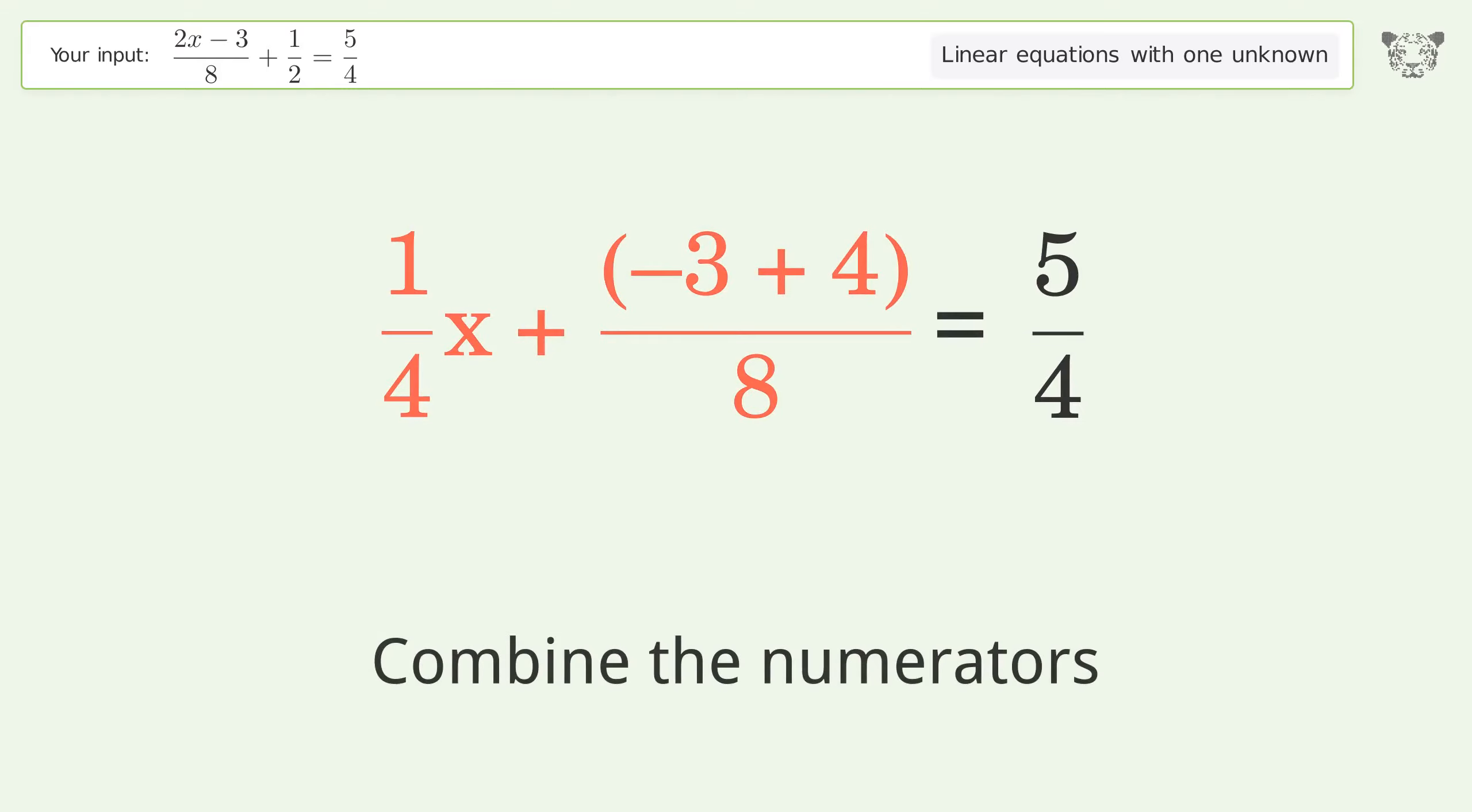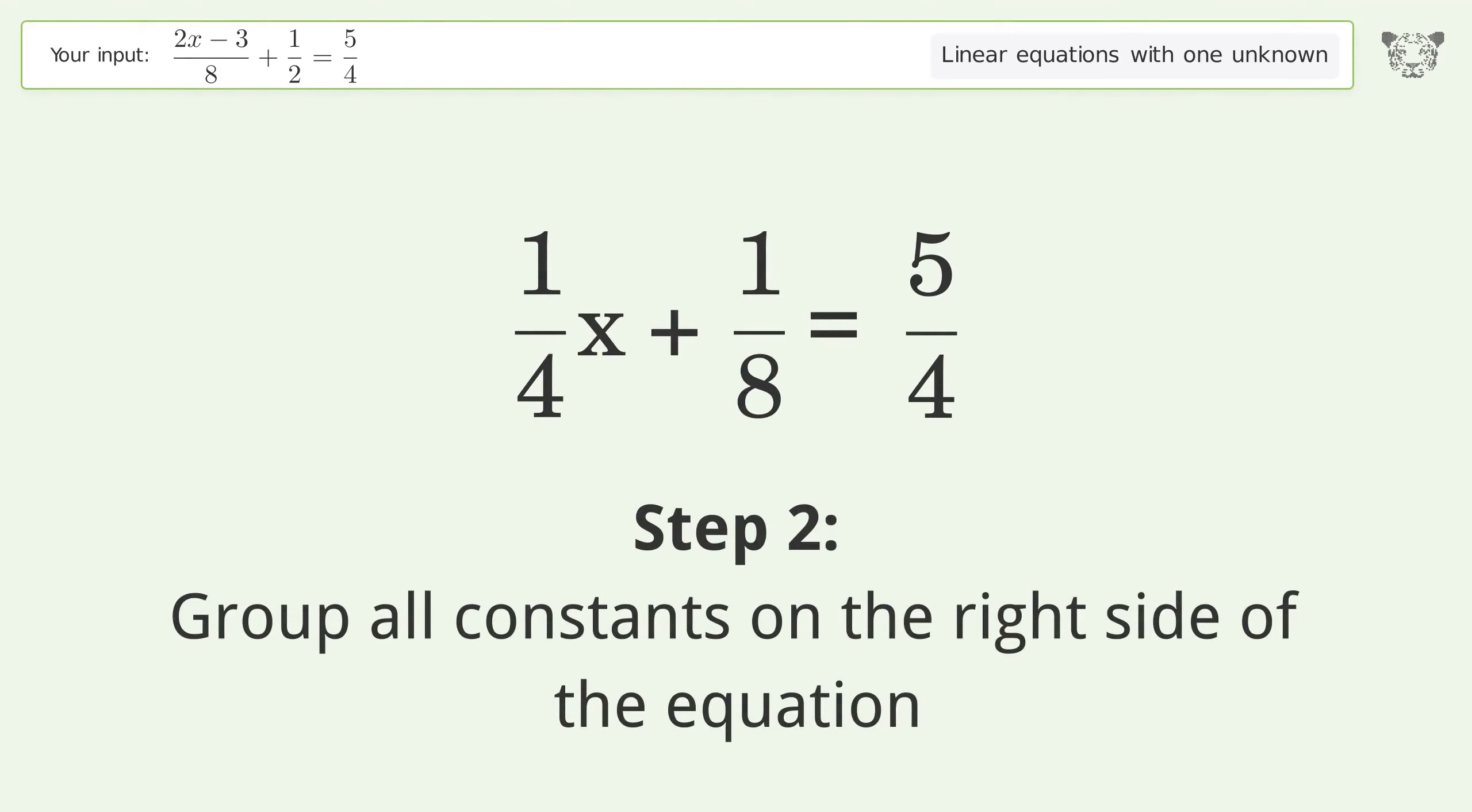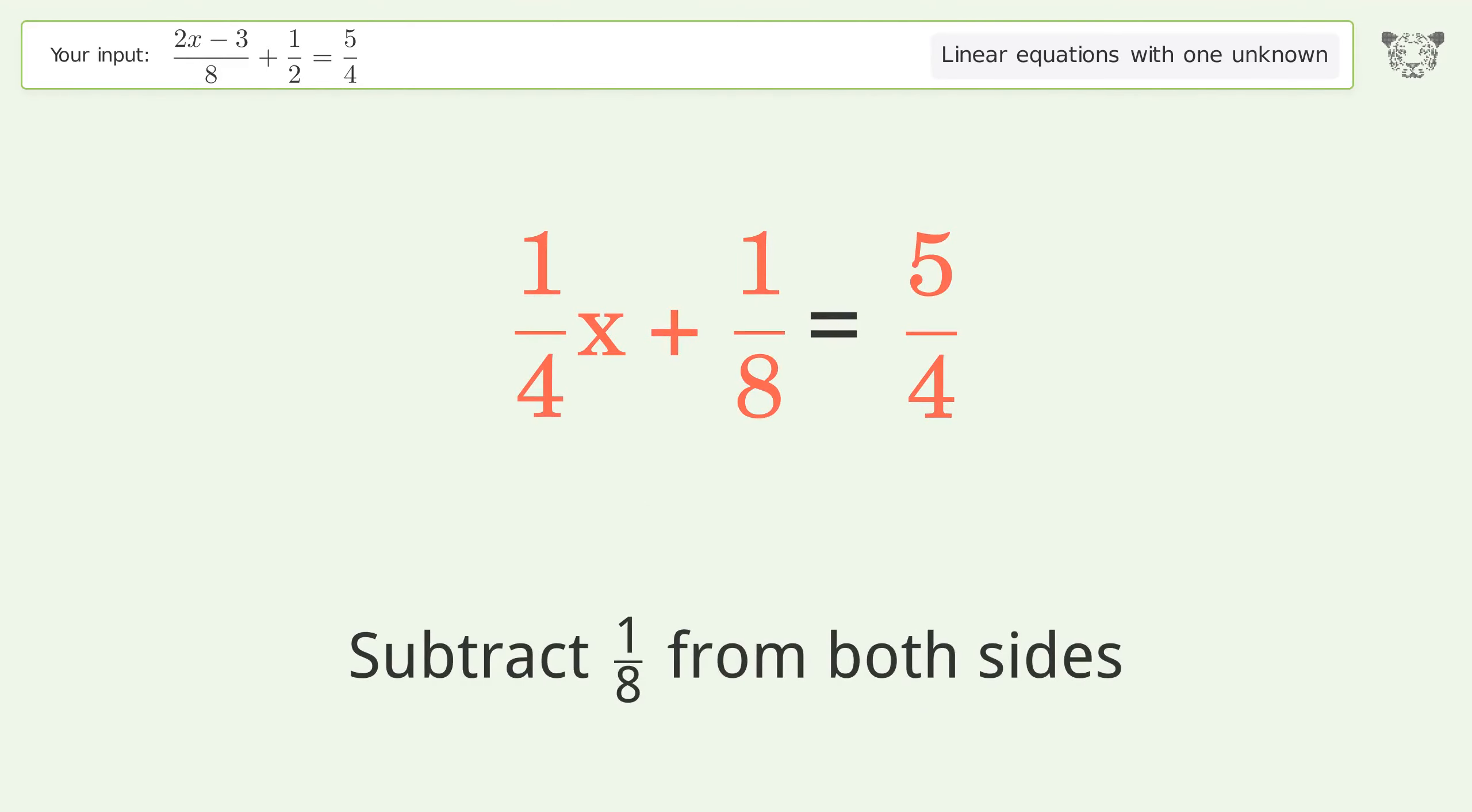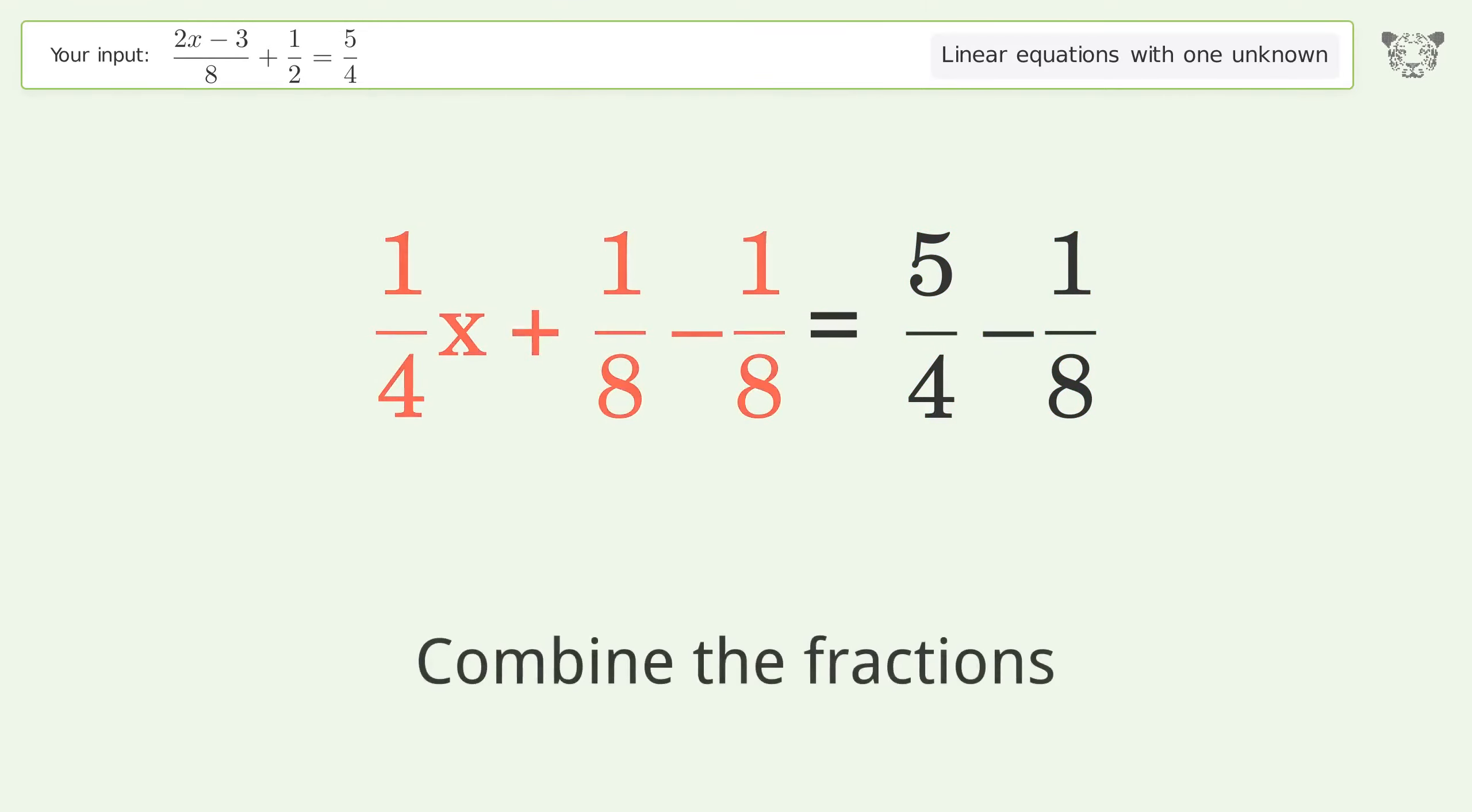Combine the numerators. Group all constants on the right side of the equation. Subtract 1 over 8 from both sides. Combine the fractions.